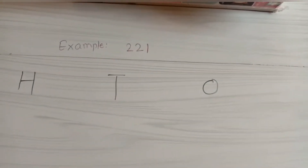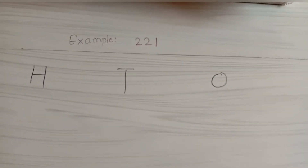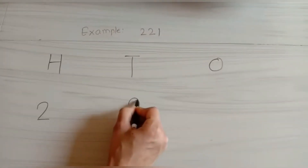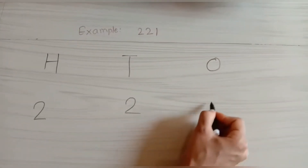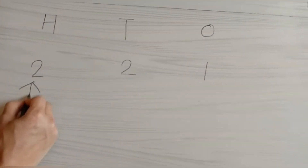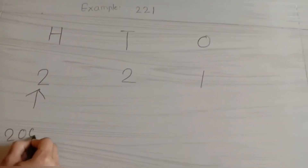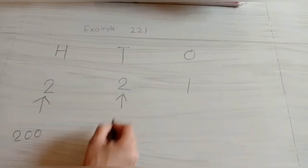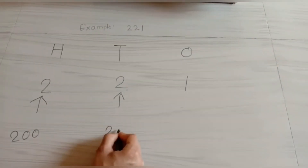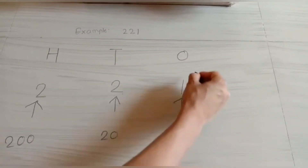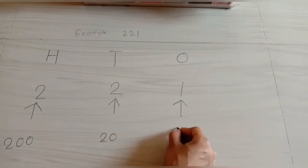Let's put each digit in its place. Two hundred and twenty one: this digit shows two hundreds which means two hundred, this digit shows two tens which means twenty, and this digit shows one one which means one.